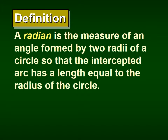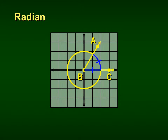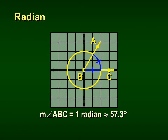Our next definition is radian. Radian comes from the idea of a radius — it's the measure of an angle formed by two radii of a circle such that the intercepted arc has a length equal to the radius of the circle. It's almost like an equilateral triangle except that third side is an arc. So the measure of angle ABC shown here is one radian.